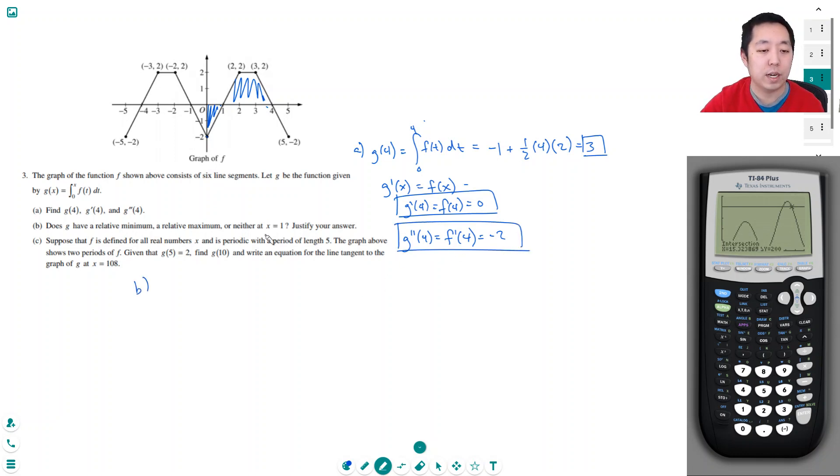Part B: Does g have a relative min, max, or neither at x equals 1? To be a relative min or max, I need to know what g prime at 1 is. g prime at 1 is equal to f of 1 which is equal to 0, so that means that 1 is a critical point.